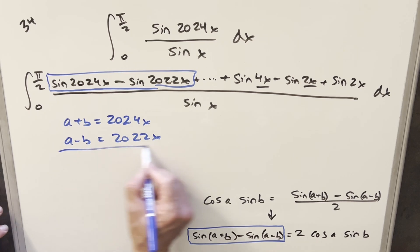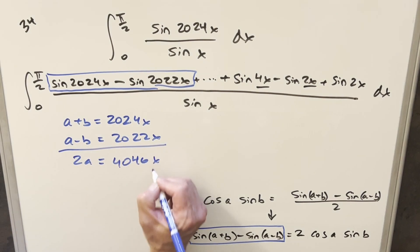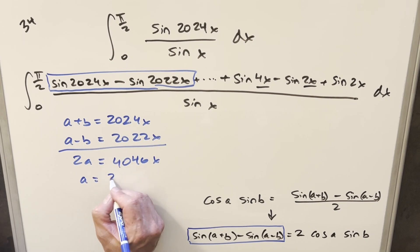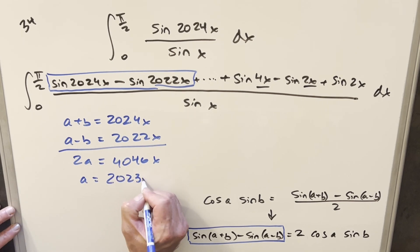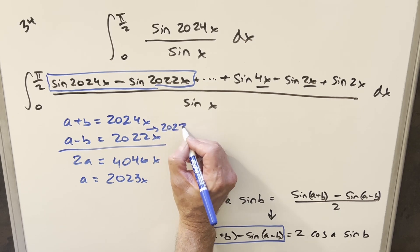So to see what our a value is, we can just add these two together. We have 2a equals 4046x or a equals 2023x. Just noticing that 2023 is between 2022 and 2024. And so this is how it works in this first example.